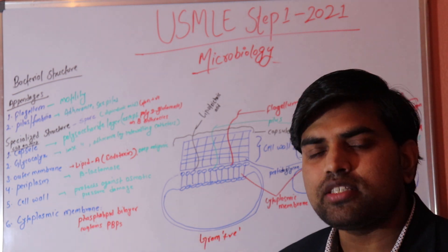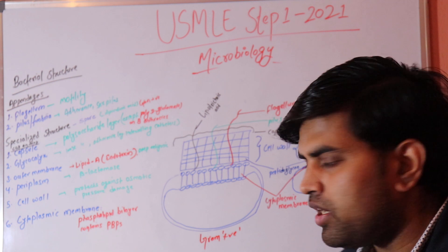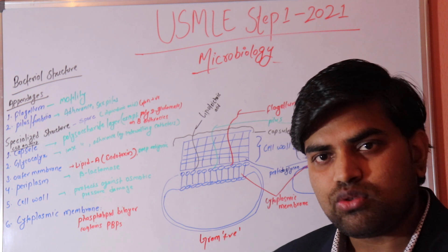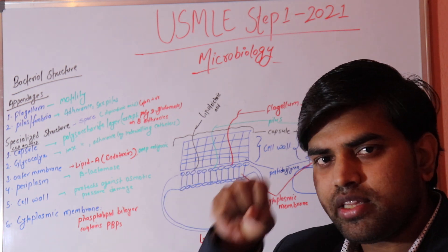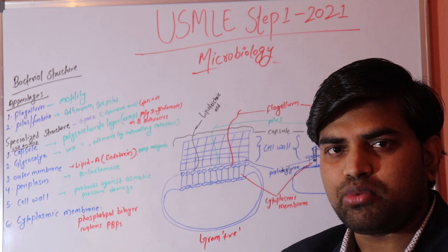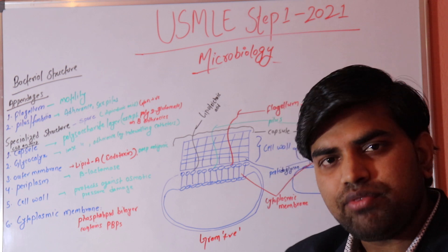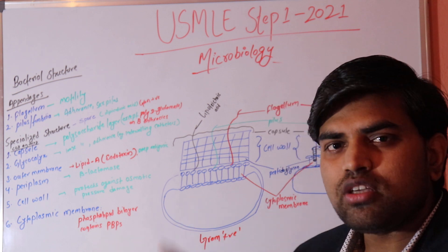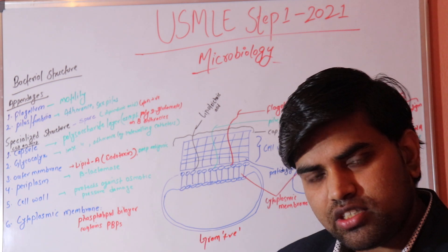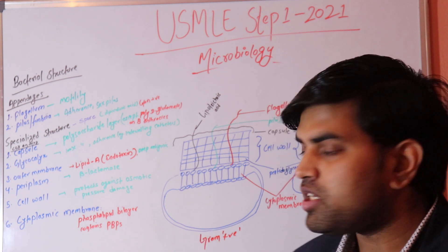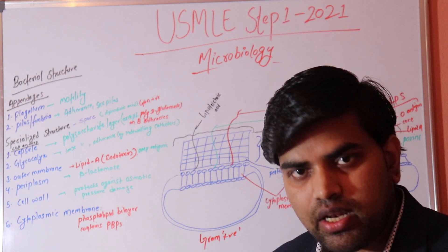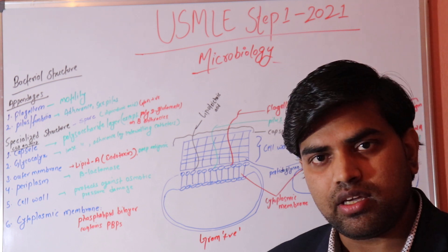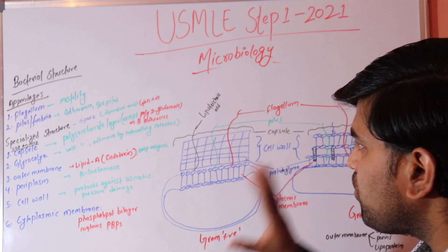The cytoplasmic membrane is a phospholipid bilayer that contains penicillin-binding proteins (PBPs). When penicillin reaches the PBPs, it inhibits them, blocking transpeptidase enzyme production. Without transpeptidase, the cell wall cannot be synthesized properly — it becomes porous, water enters, and the cell swells and bursts. Any modification in the penicillin-binding protein leads to drug resistance, as seen in MRSA.